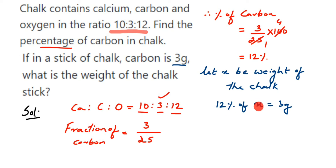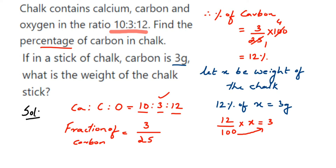If I solve this and get the value of x, that will be the weight of the chalk. So: 12% of x = 3, which means (12/100) × x = 3. To find x, I transpose 100 to the other side — it comes to multiplication — and transpose 12 to the other side — it comes to division.